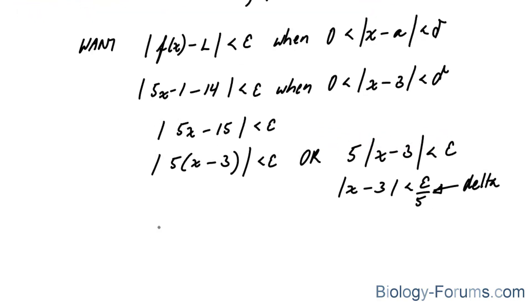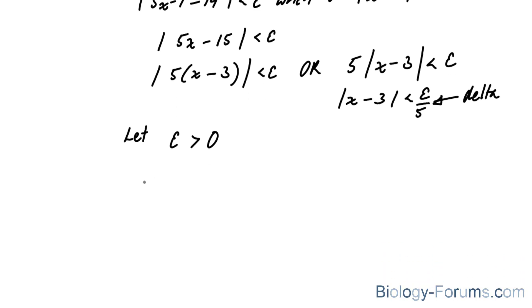Next, we will let epsilon be greater than 0. That said, if 0 is less than the absolute value of x minus 3 less than delta,